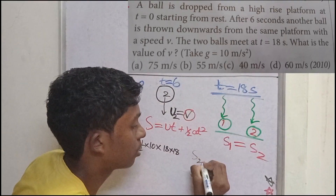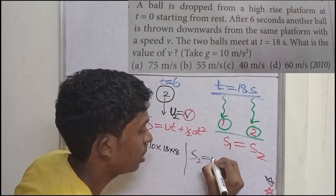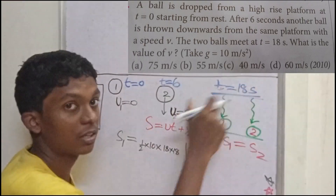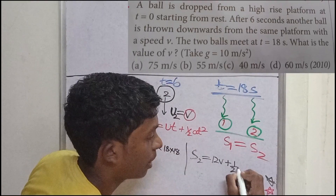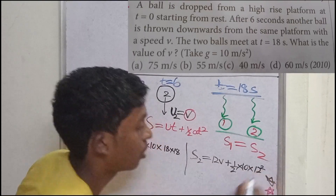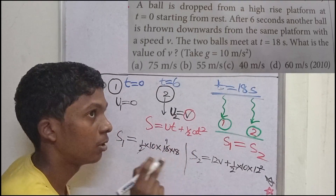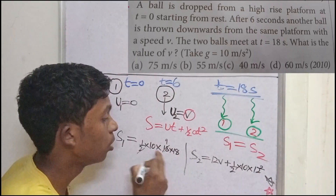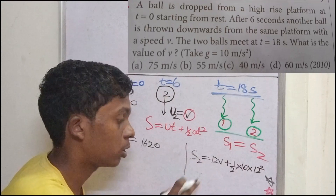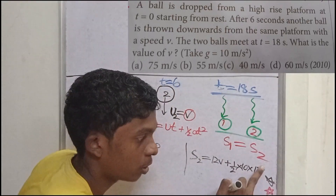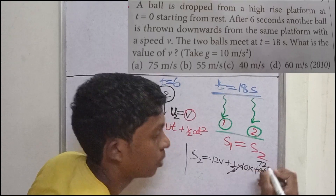For ball 2: S2 equal to ut plus half at squared. U equal to V, and time is 18 minus 6 equal to 12 seconds. So S2 equals 12V plus half into 10 into 12 squared. 12 squared is 144. So S2 equals 12V plus 144 divided by 2 into 10, which gives 12V plus 720.